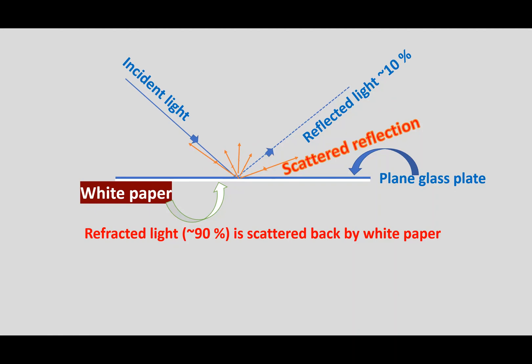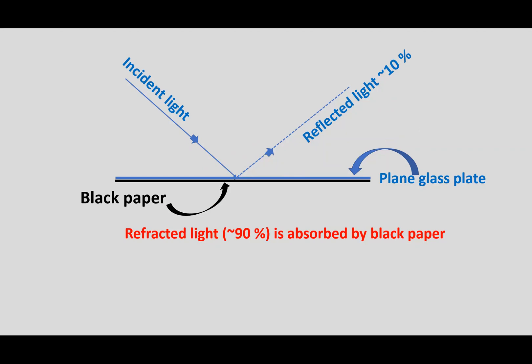Now, let us go to the third case, where the black paper is put under the glass plate. And this is shown here by this black line. This is the black paper put. And this is the glass, plain glass plate. In this, when the incident light falls, it gets divided into two parts.